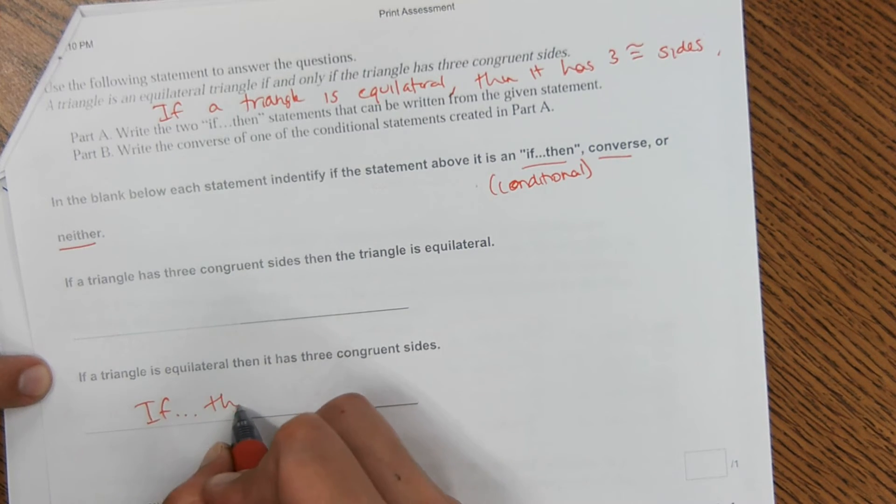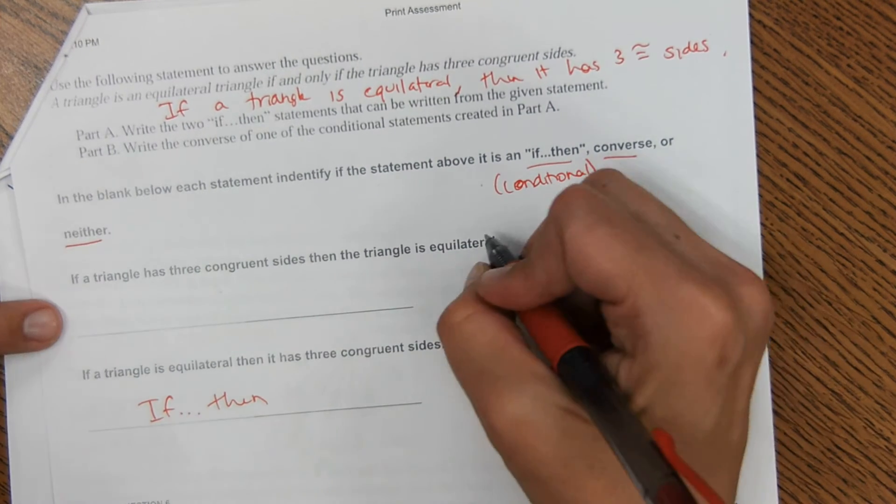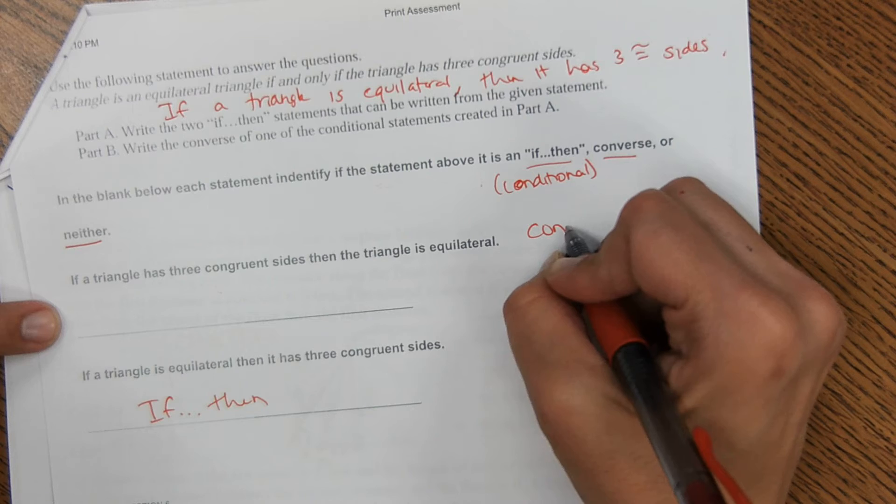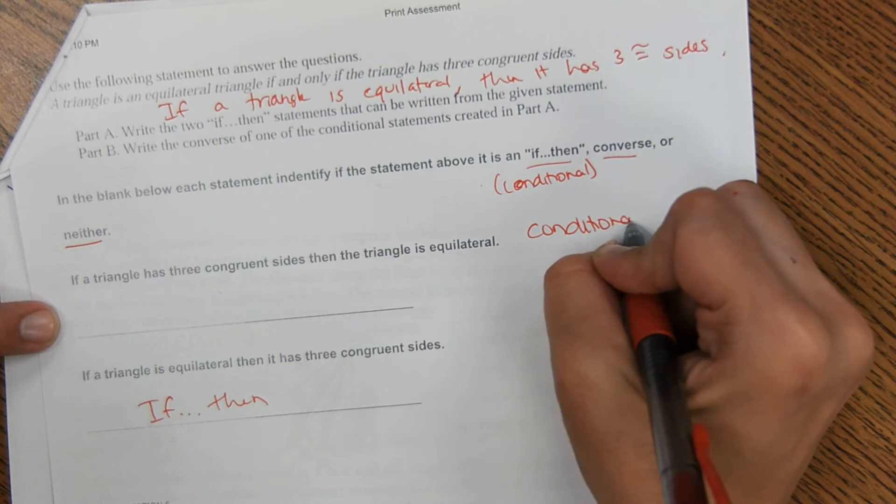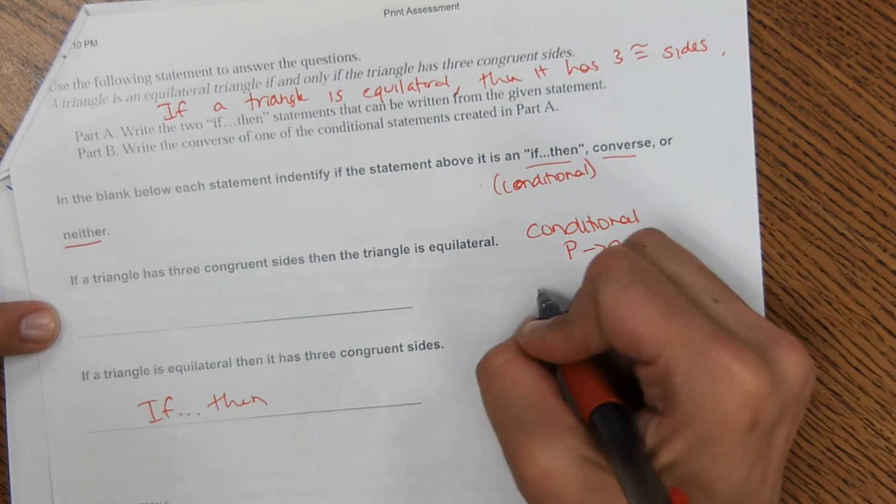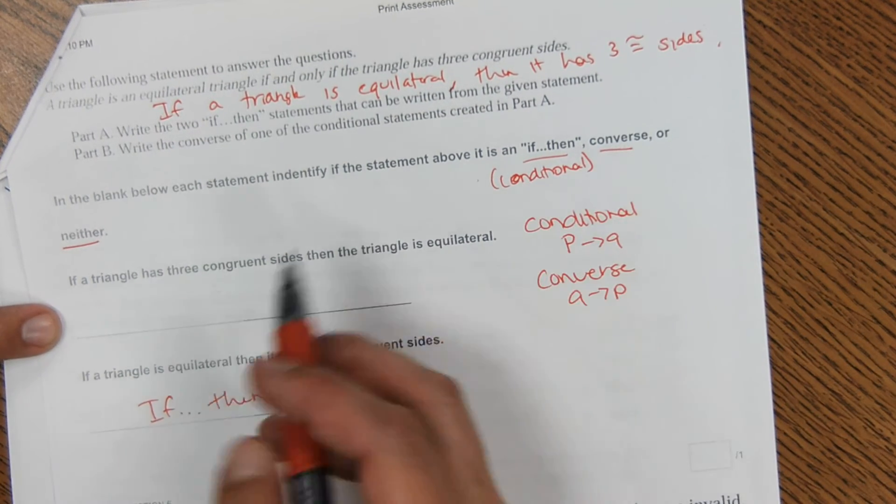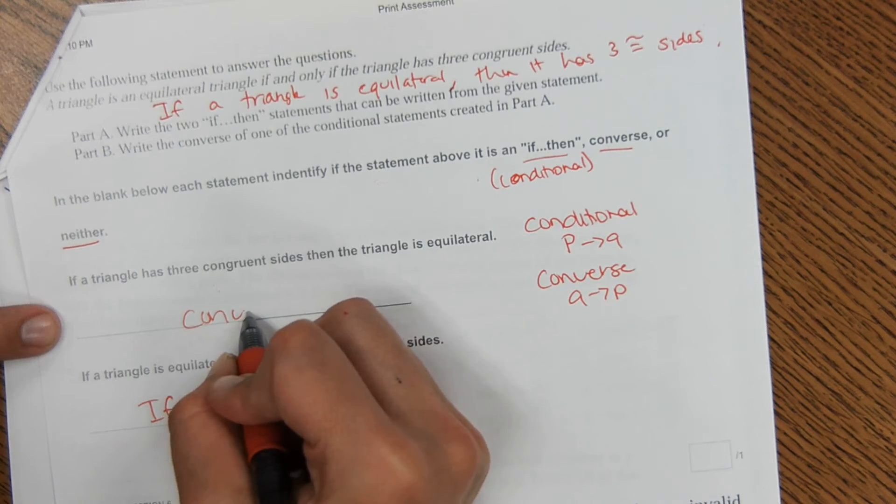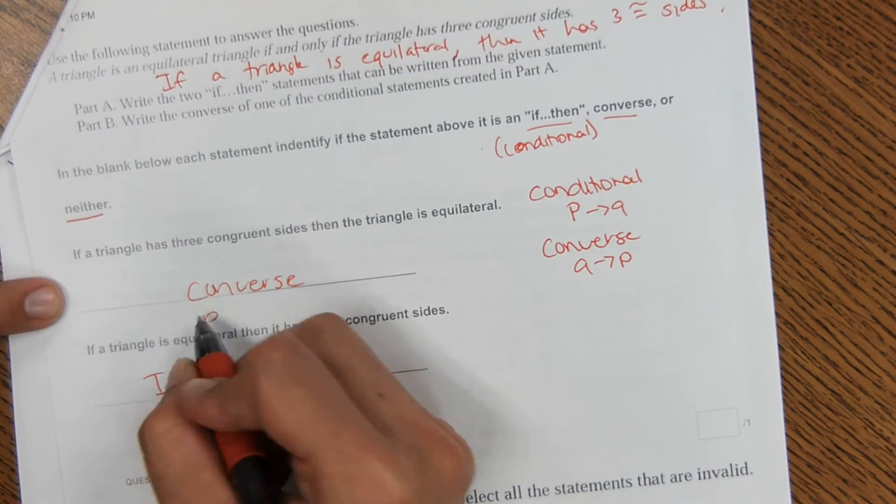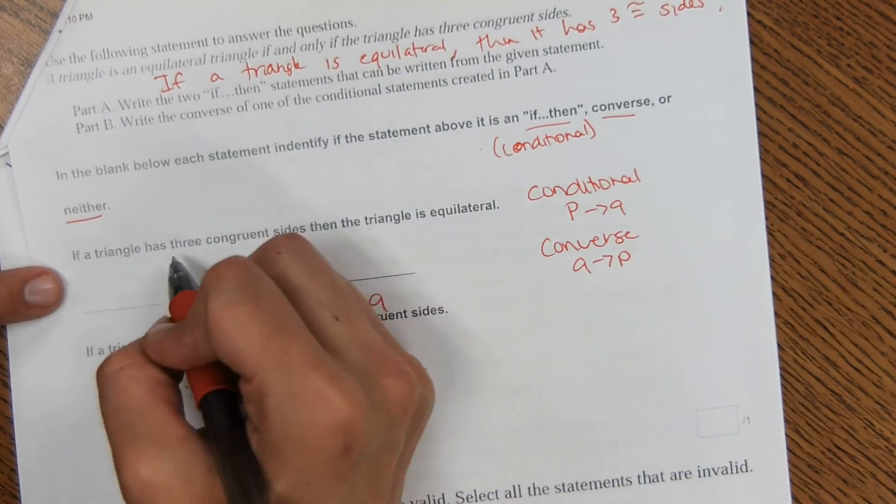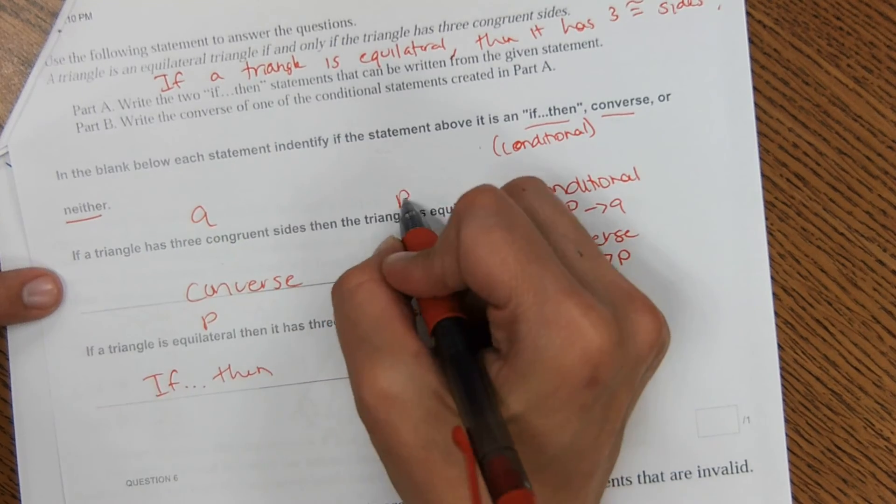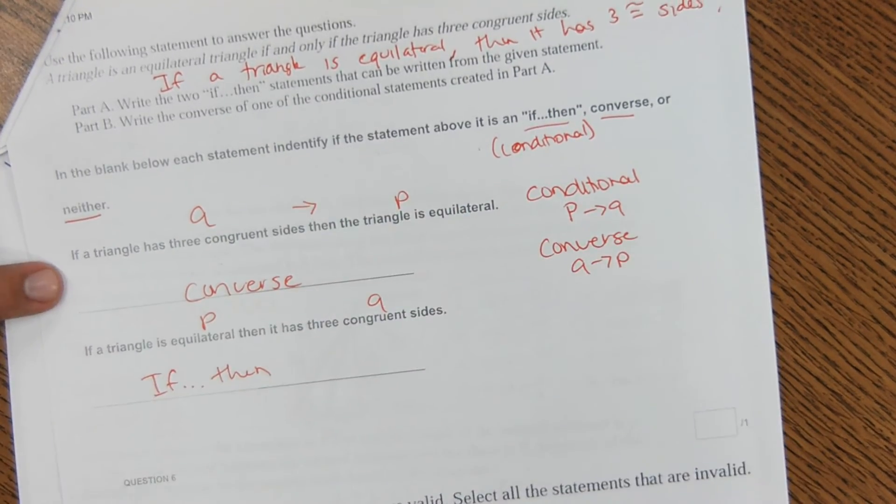So for conditional, it should be P to Q, and then for converse, it would be Q to P. So based on that, this would be the converse. Here you have P to Q, and then they switch it here. Three congruent sides would be the Q, then the P. So this one is converse.